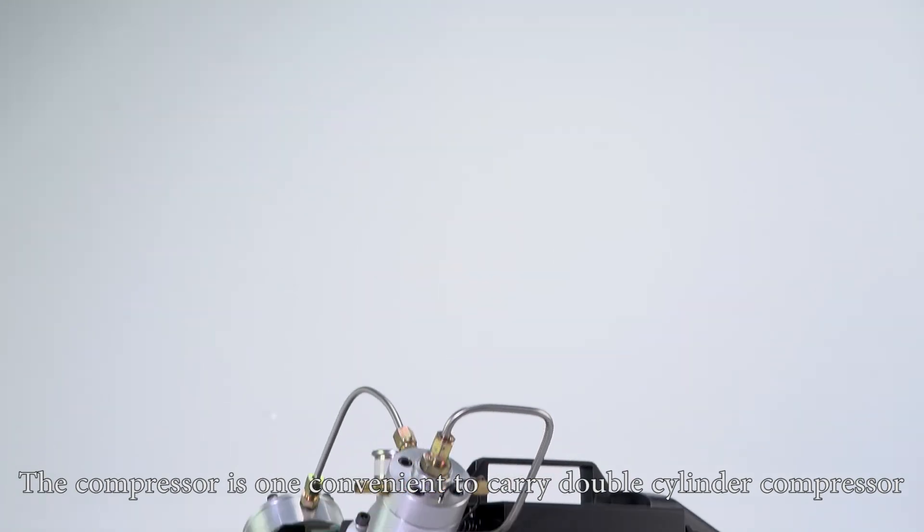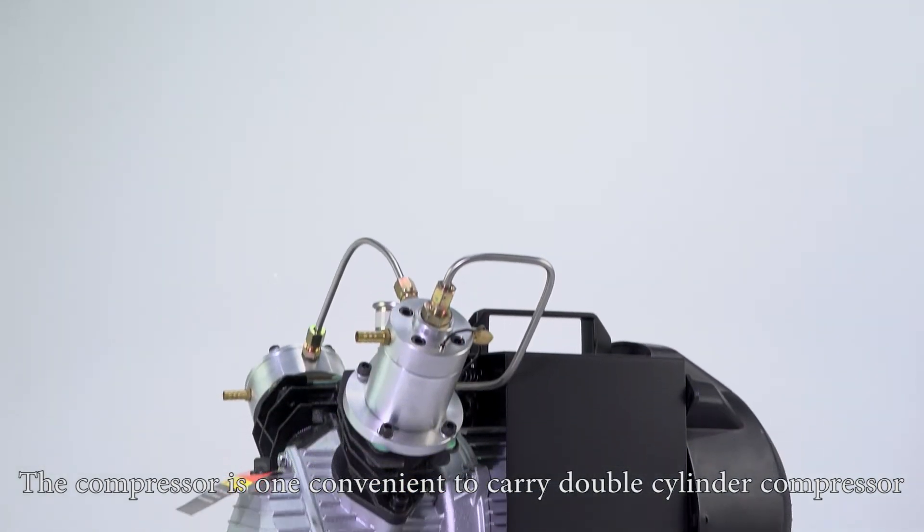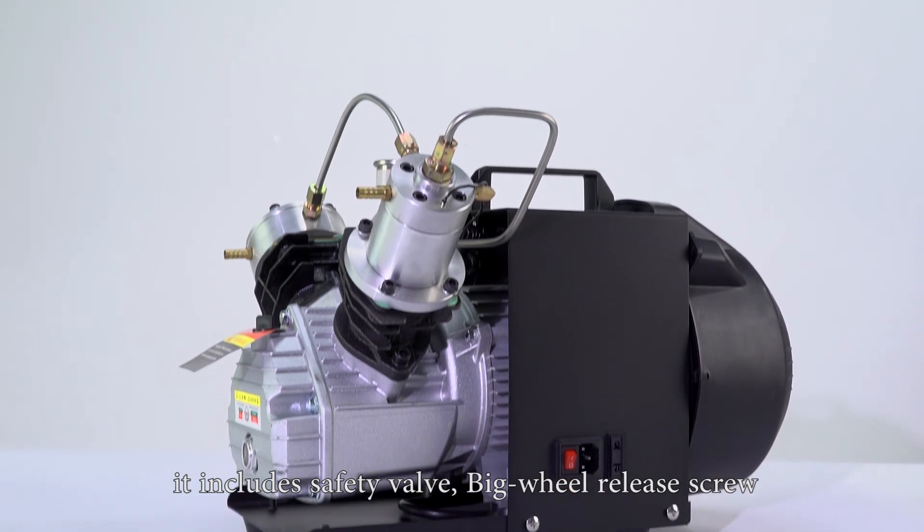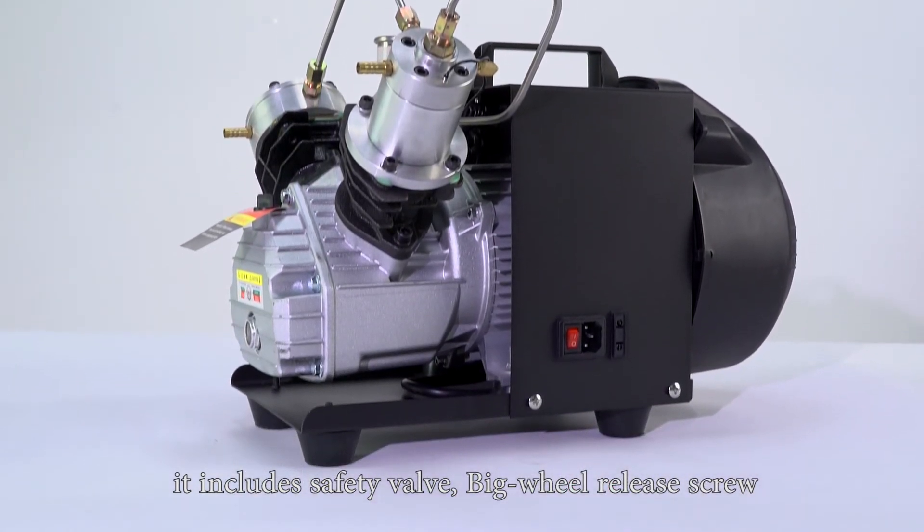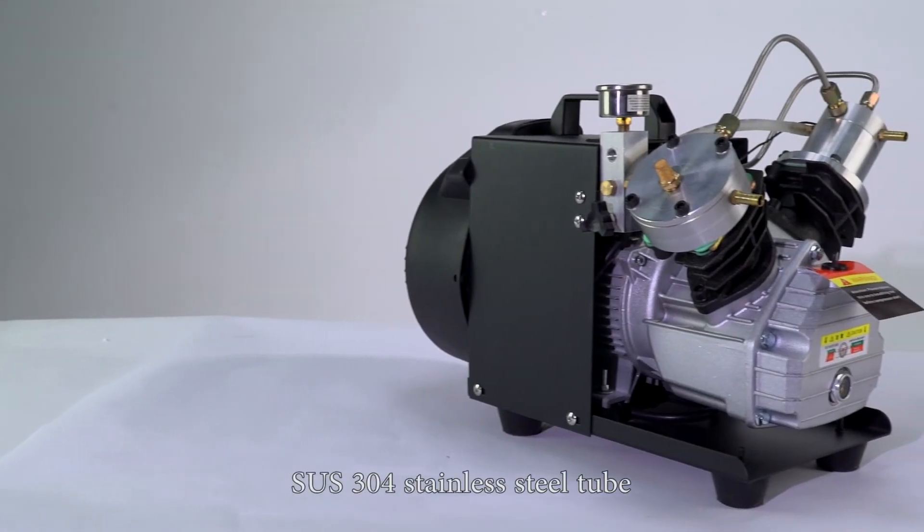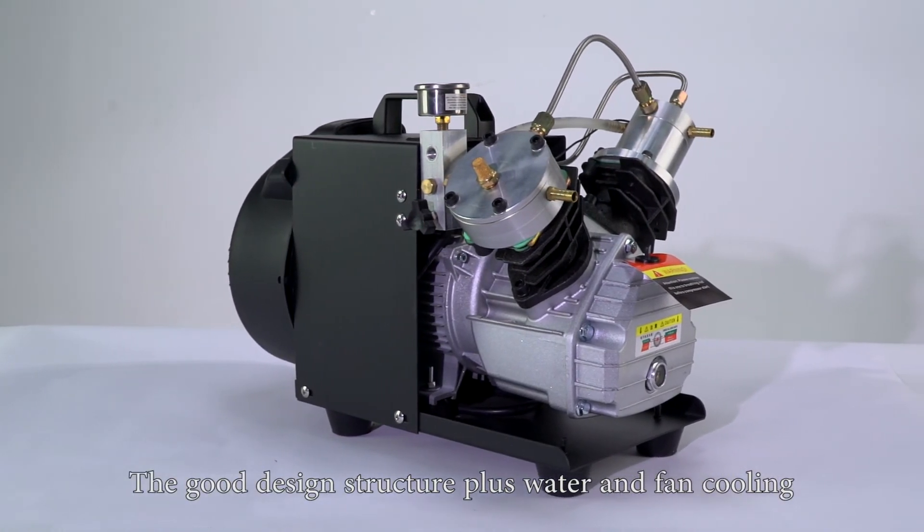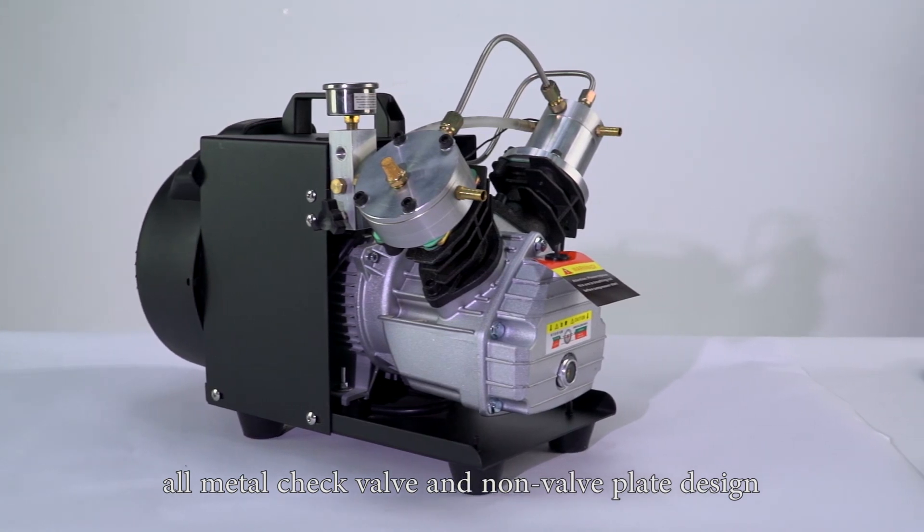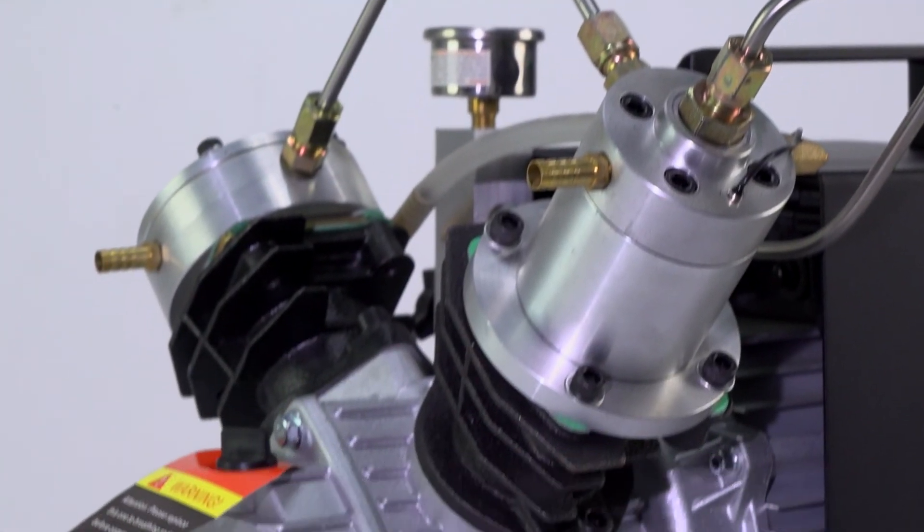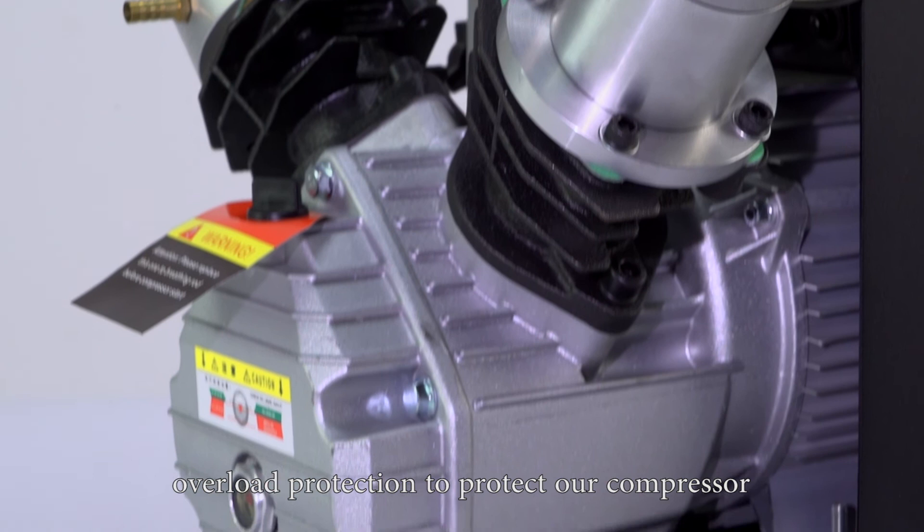The compressor is a convenient to carry double cylinder compressor. It includes a safety valve, big wheel release screw, SUS 304 stainless steel tube, water and fan cooling, all-metal check valve, non-valve plate design, and overload protection.